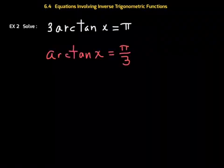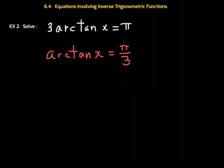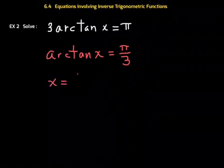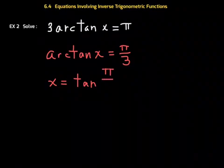All right, cool. That's from dividing both sides by 3. And you'll remember, hopefully, from 6.1 that this notation means that π over 3 is the angle whose tangent is x. In other words, we can rewrite this as x is equal to tangent of π over 3, right?